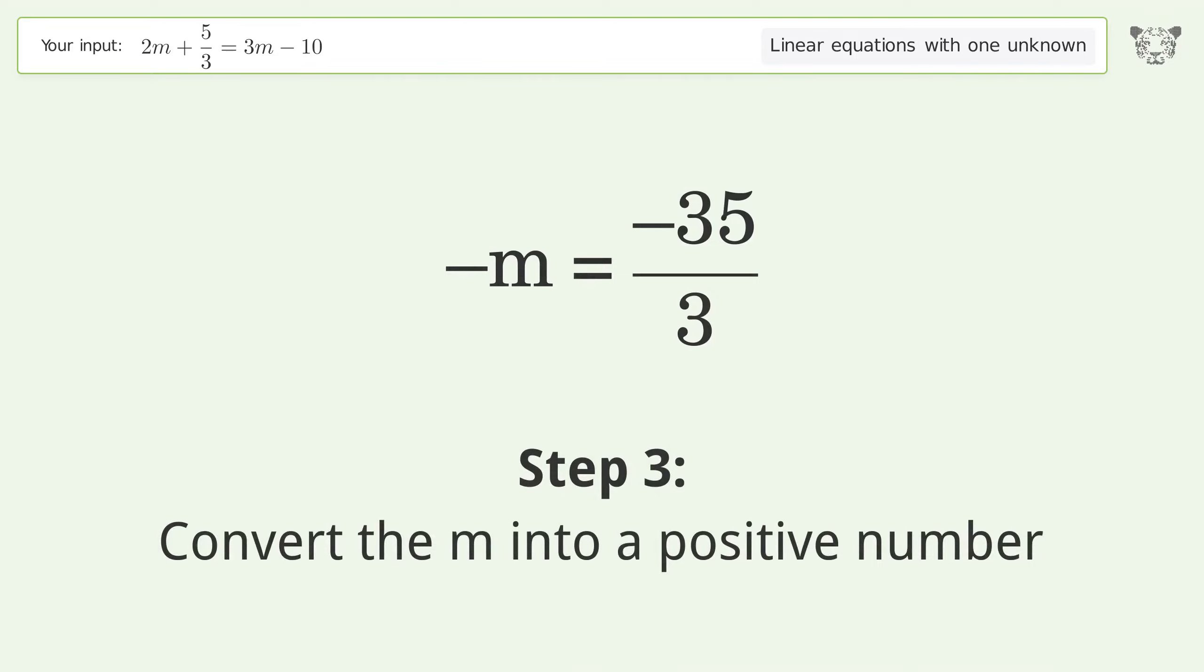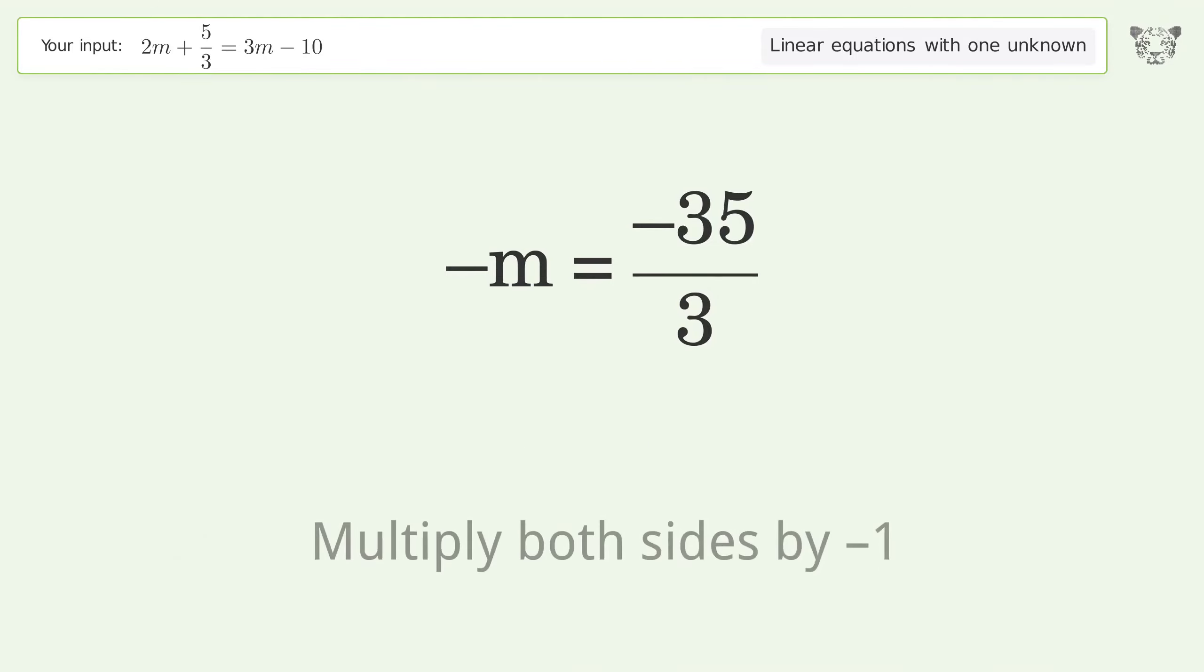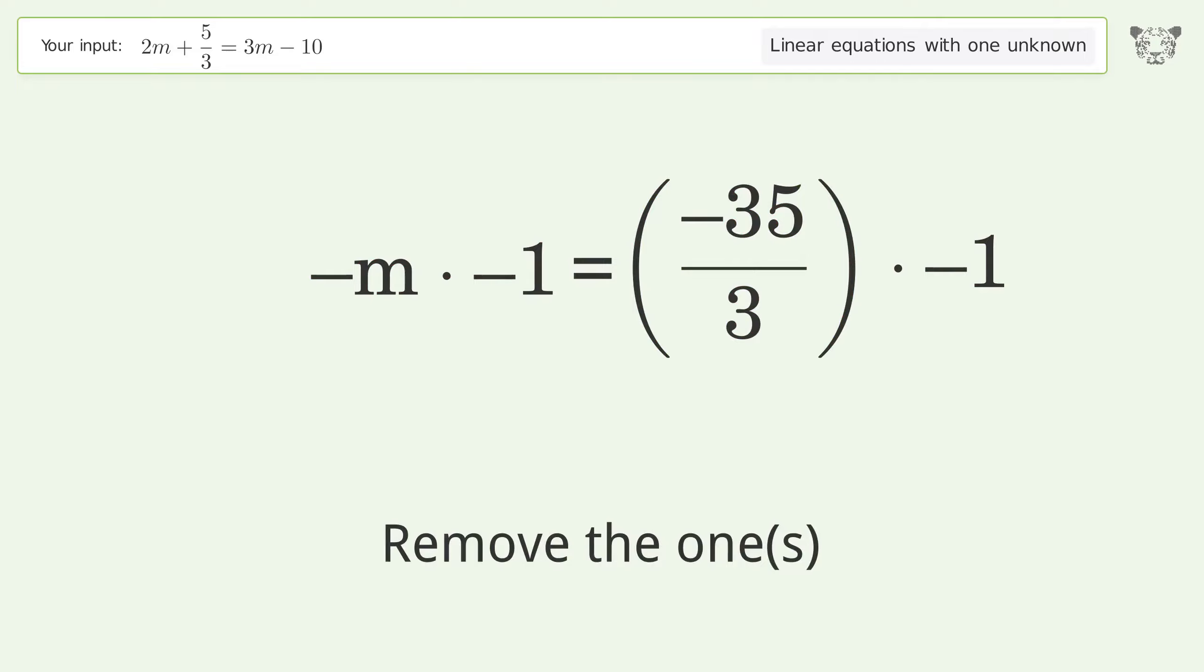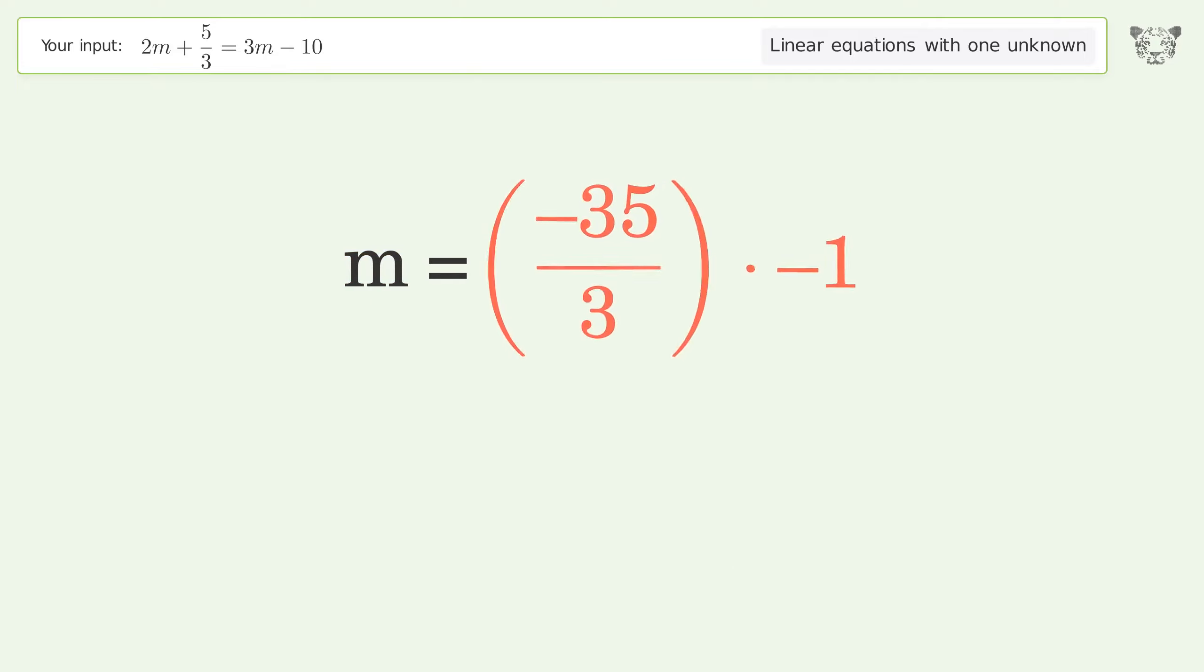Convert the m into a positive number. Multiply both sides by negative 1. Remove the ones. And so the final result is m equals 35 over 3.